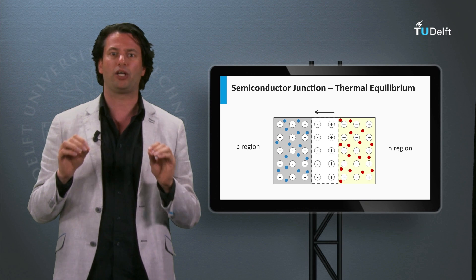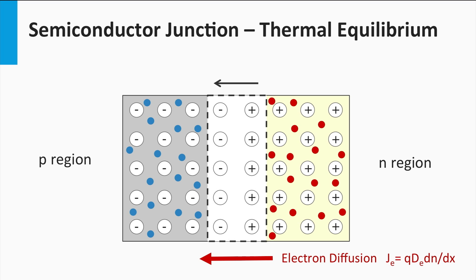We have introduced two simple equations for drift and diffusion earlier this week. The diffusion current density for electrons is ruled by the density gradient, which is the electron density at the n-region minus the electron density in the p-region. The electrons are the minority charge carriers in the p-region, which means that the density gradient is fully determined by the majority electron density in the n-region. The same is true for the holes — the diffusion current density for holes is ruled by the density gradient, which is the hole density at the p-region minus the hole density in the n-region. This means the density gradient is fully determined by the electron density in the n-region. In other words, diffusion is controlled by the majority charge carriers in the p- and n-region.